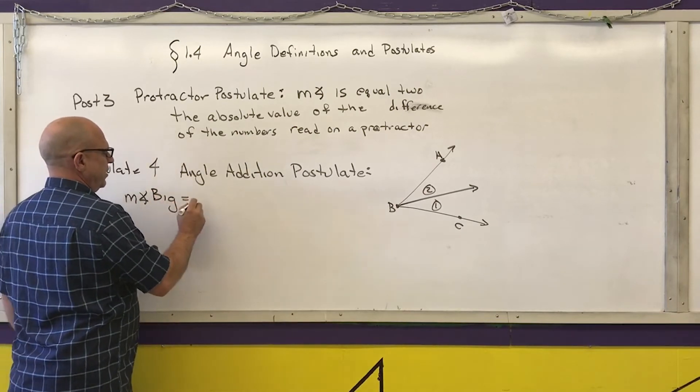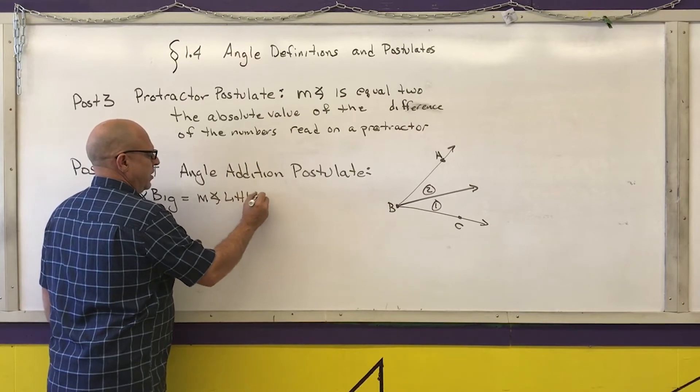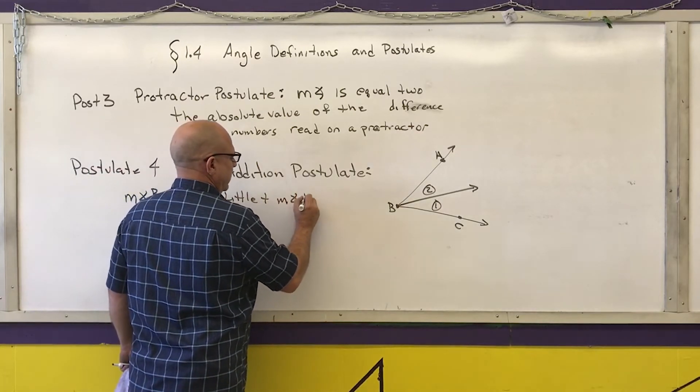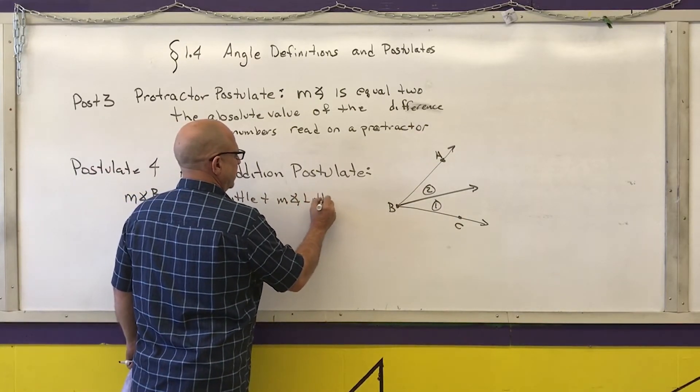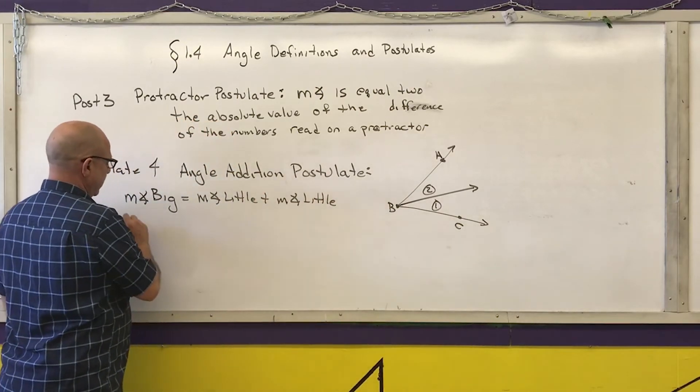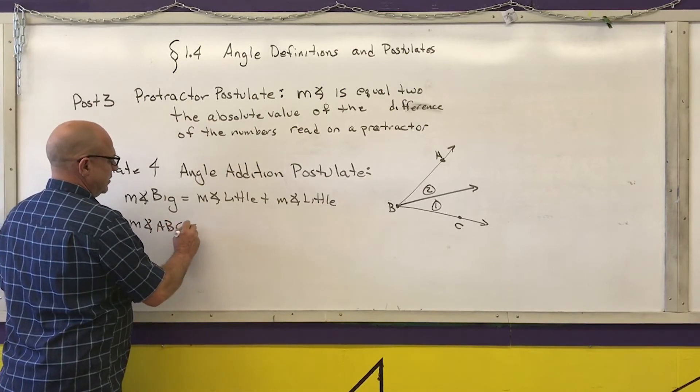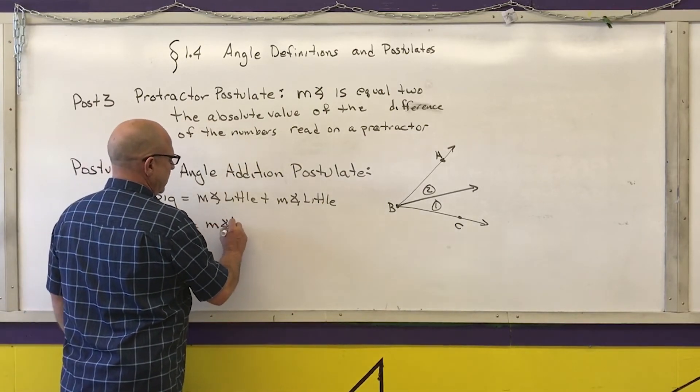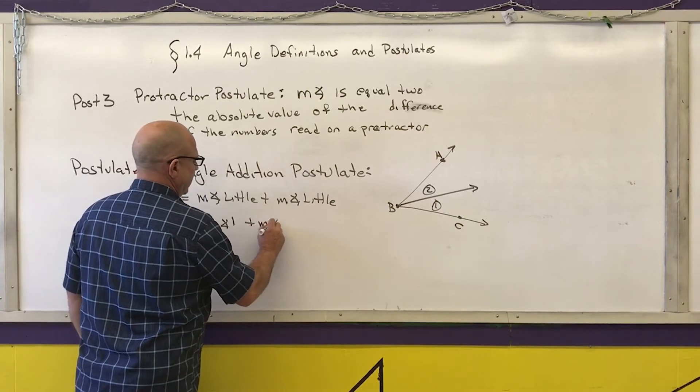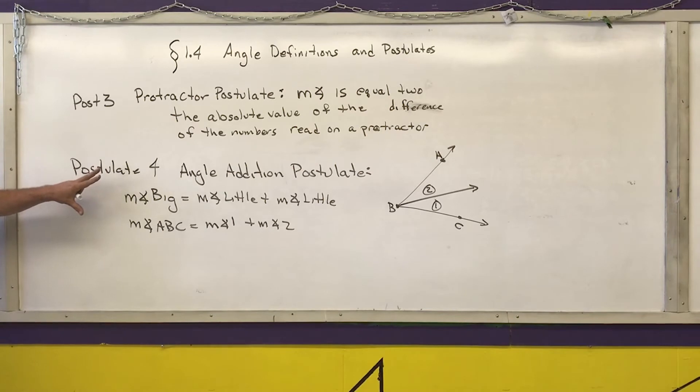So I have a big angle that's made up of two adjacent angles, then the measure of the big angle is equal to the measure of the little plus the measure of the little. So little angle plus little angle equals big angle. In this case the measure of angle ABC is equal to the measure of angle one plus the measure of angle two.